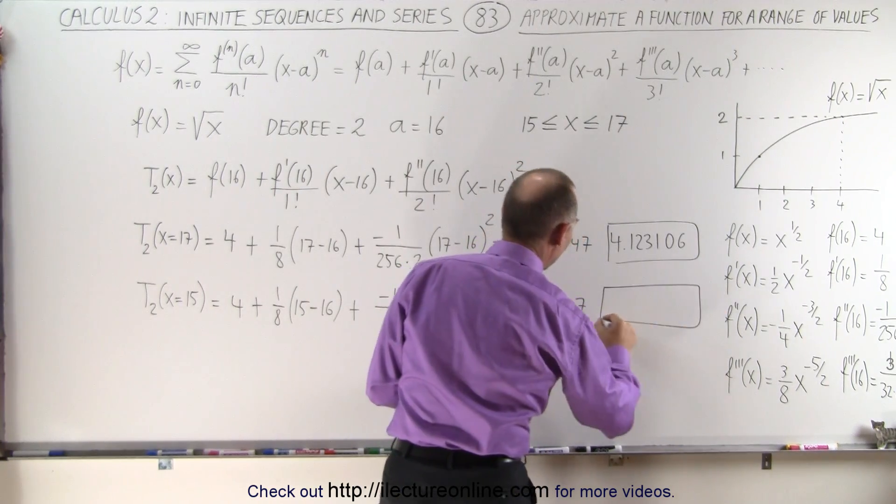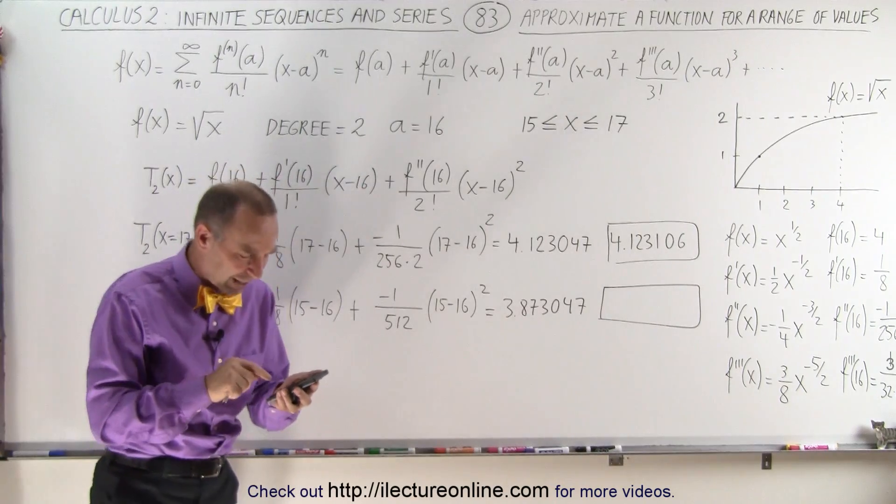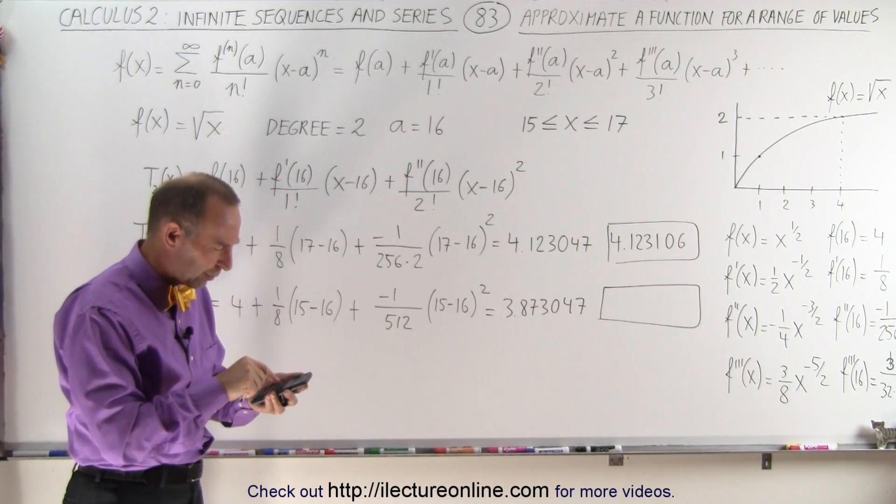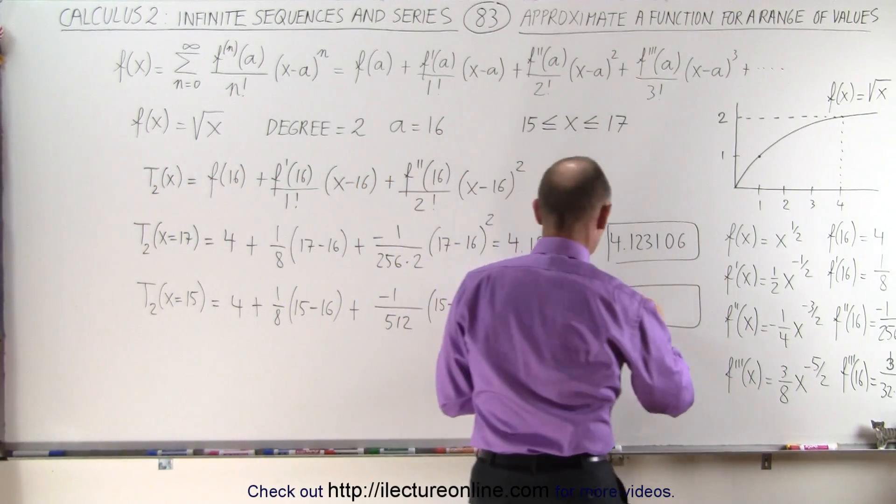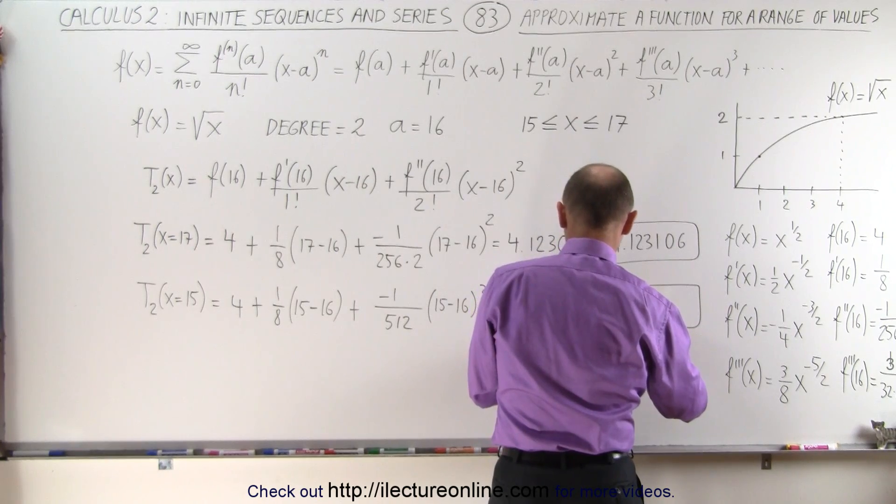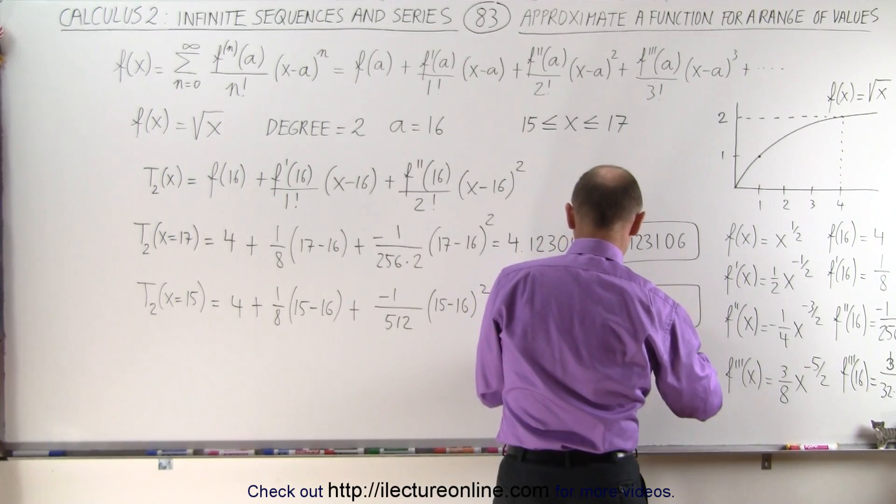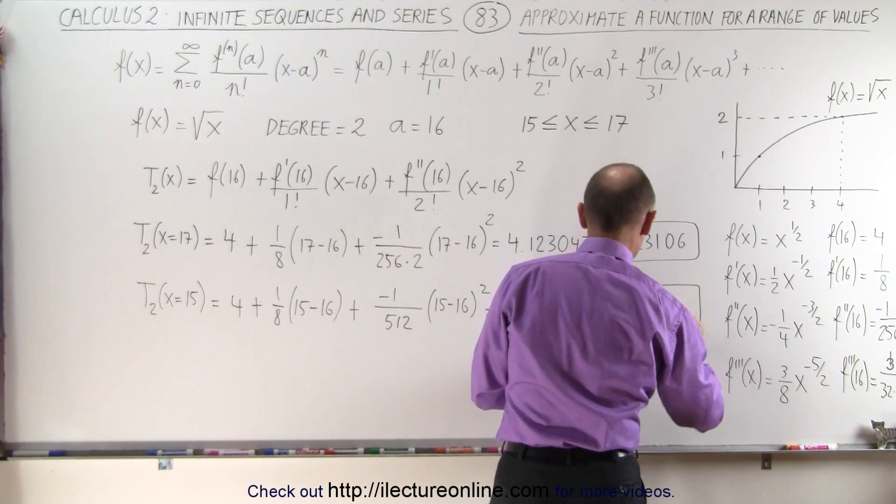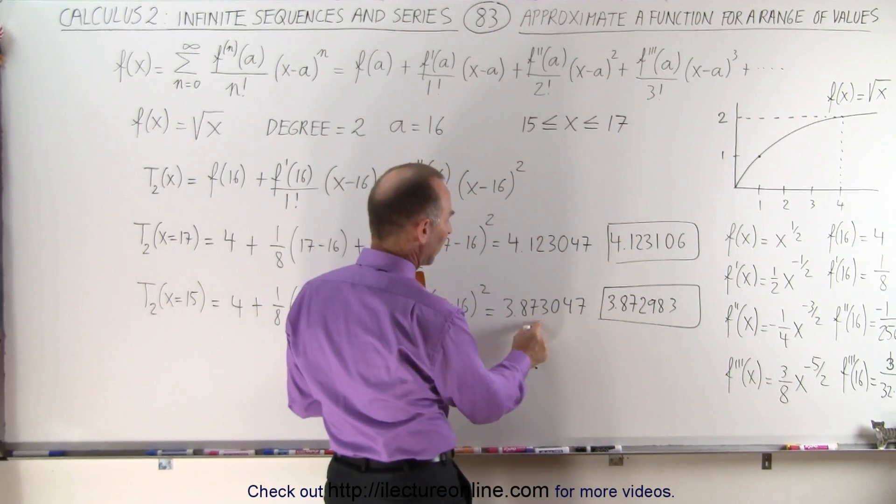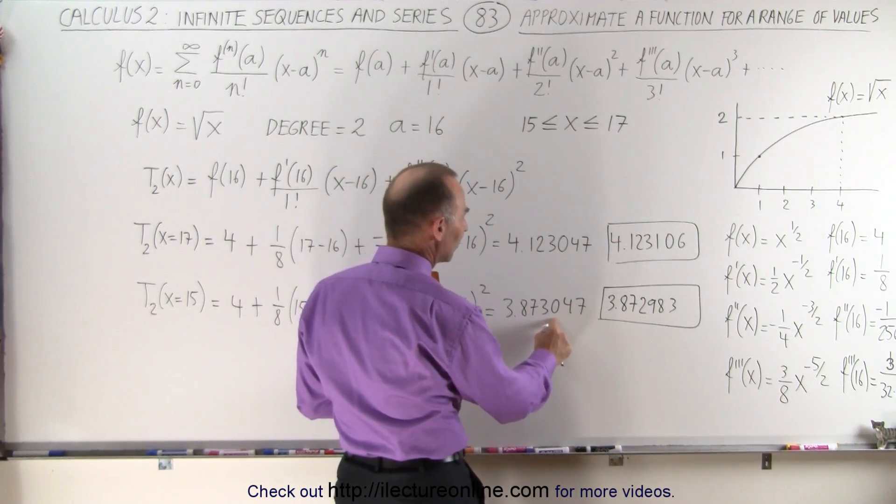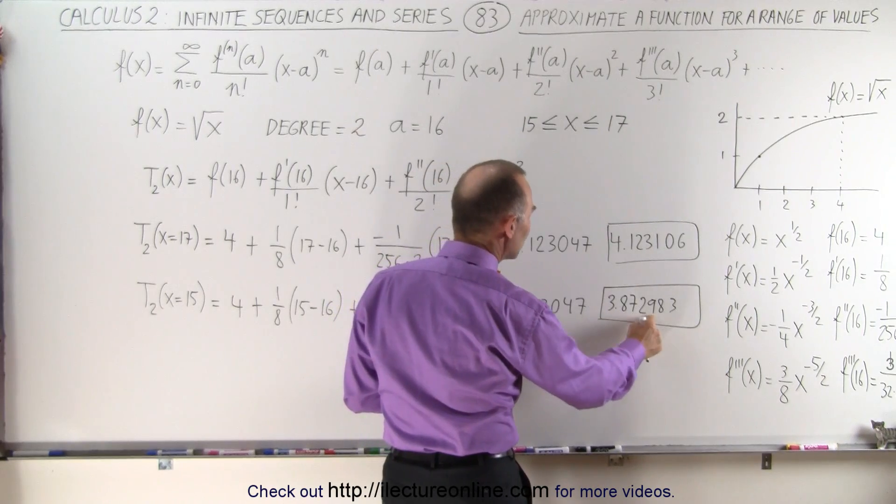And what would the exact value be if we were to take the square root of 15? Let's take a look. Square root of 15 gives us 3.872983. And you can see how close we got 3.8730, 3.87298.